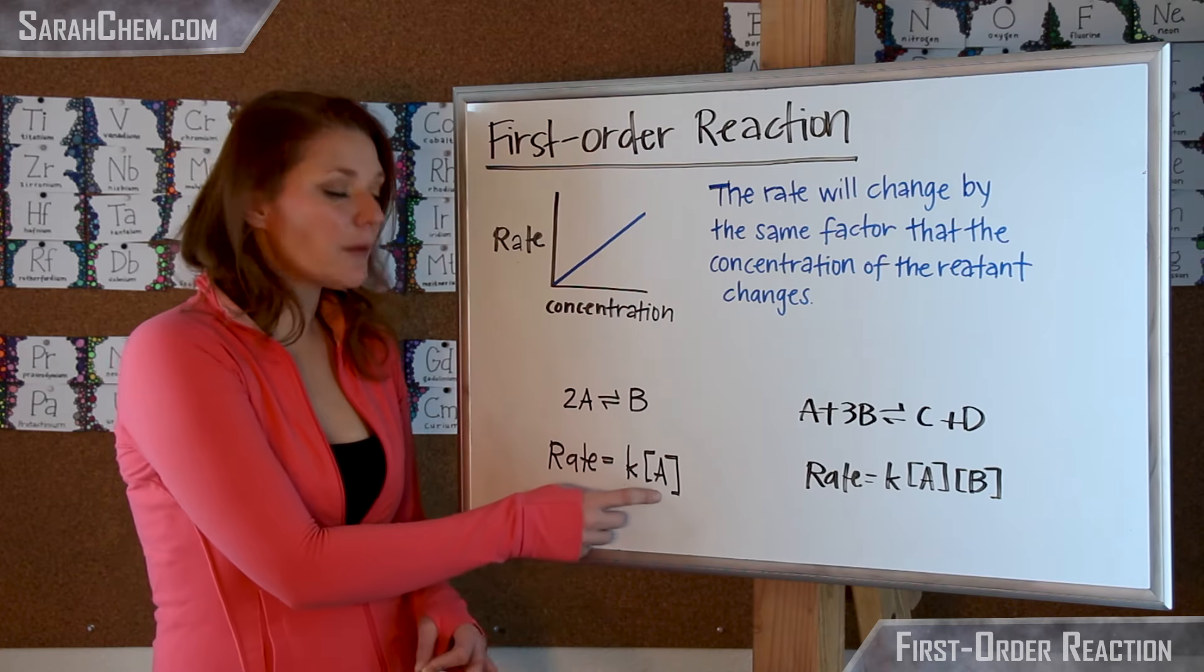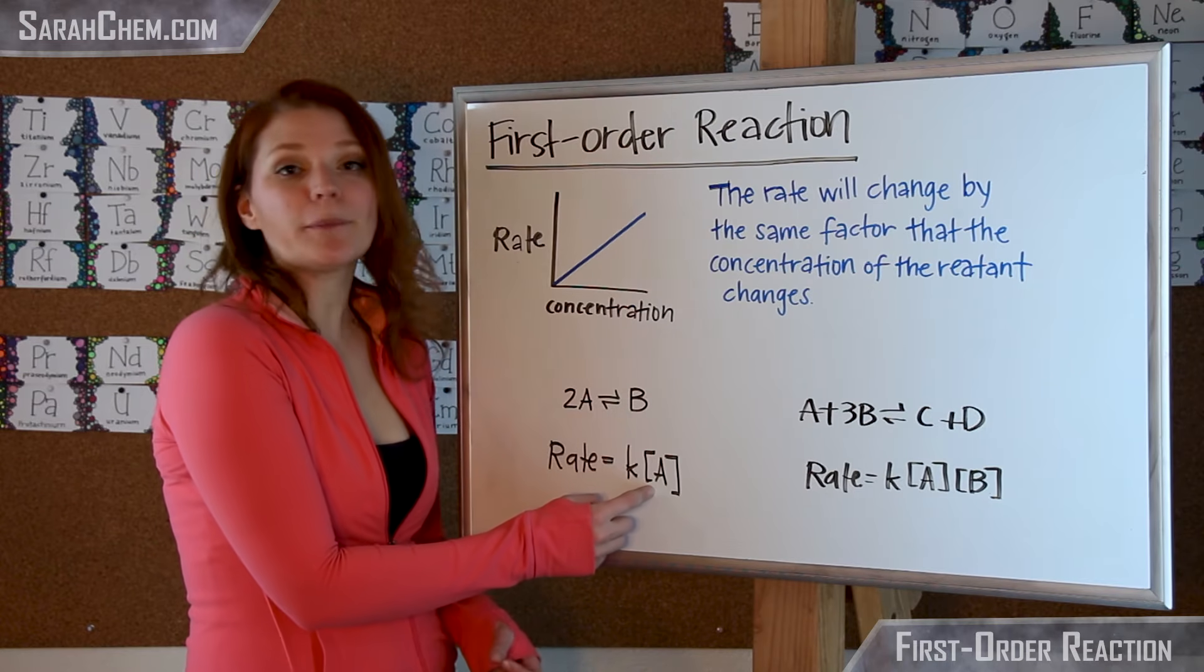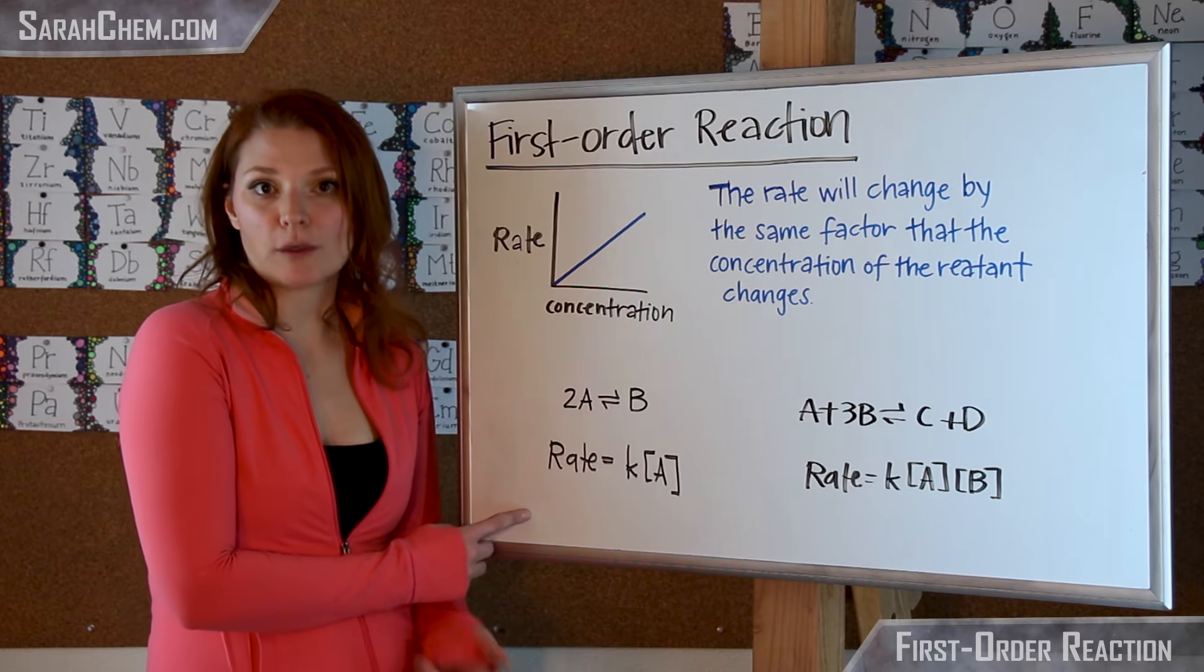Meaning if I were to double the concentration of A, I would find that the rate also doubled. If I were to triple the concentration of A, I would find that the rate also tripled.